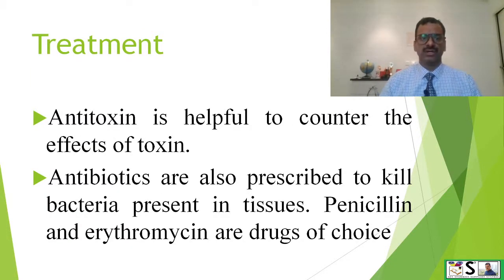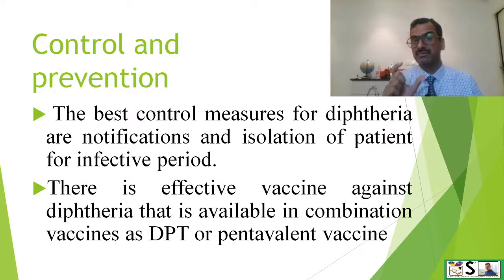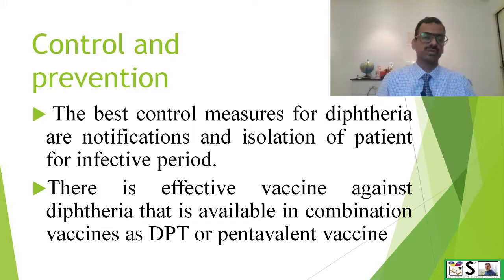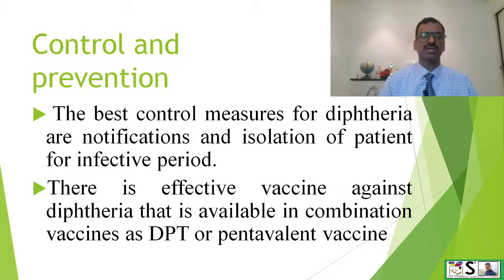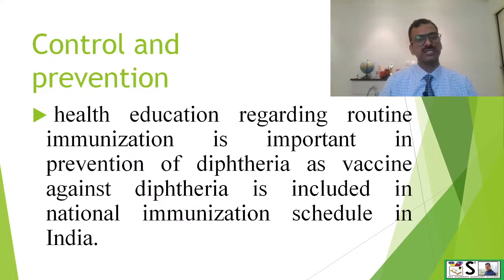What treatment can be done? Antitoxin is helpful to counter the effects of the toxin, so an antitoxin injection is given, and antibiotics are also prescribed to kill the bacteria. Penicillin and erythromycin are drugs of choice. The best control measures for diphtheria are notification of the disease and isolation of the patient for the infective period. There is effective vaccination available against diphtheria in combination with other vaccines like DPT and pentavalent vaccine, and health education regarding routine immunization is very important, as the vaccine is included in the national immunization schedule in India.